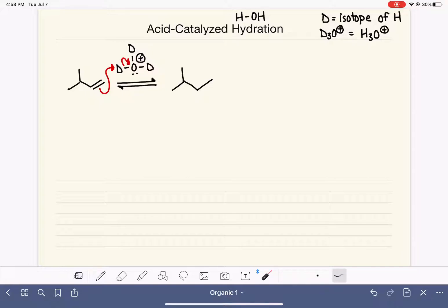We want the deuterium to add itself to this carbon or to this carbon in such a way that the most stable carbocation is formed. Markovnikov's rule tells us that the hydrogen or deuterium is going to add itself to the carbon that has the most hydrogens already present. This carbon has two hydrogens present, which means that the deuterium will go right here. And here is the intermediate that we have formed.